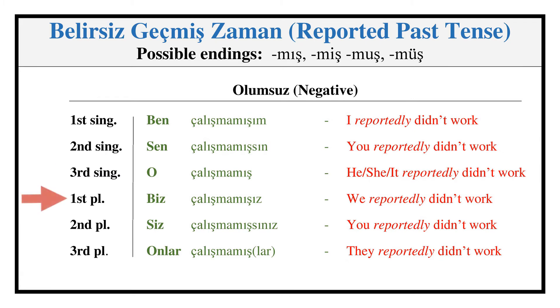Evidential Past — Negative (continued): ÇALIŞMAMIŞIZ, ÇALIŞMAMIŞSINIZ, ÇALIŞMAMIŞLAR.